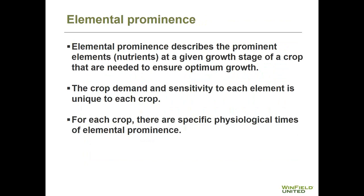As we think about these essential mineral nutrients, we can then think about elemental prominence — this will come into play as we think about plant tissue testing and how to interpret the results. Simply put, elemental prominence describes the prominent nutrients at a given growth stage of a crop that are needed to ensure optimum growth. The crop demand and sensitivity to each element is unique to each crop — a corn plant is going to require different nutrients and in different amounts at different growth stages compared to soybean and other crops. For each crop, there are specific physiological times of elemental prominence.